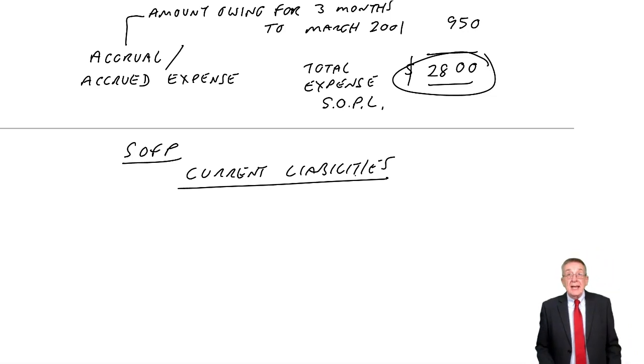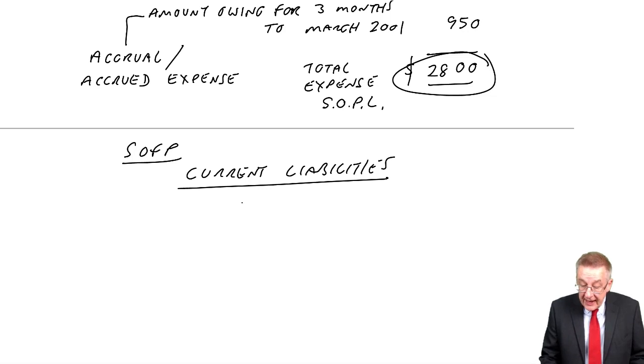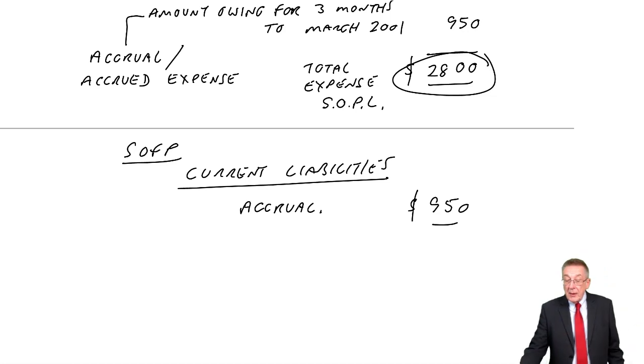It is effectively a payable, but as I say, we haven't had the bill. It's not like money owing for goods to suppliers. And so it's under the same heading, but we call it an accrual or accrued expense. How much was it? 950. And there we are.